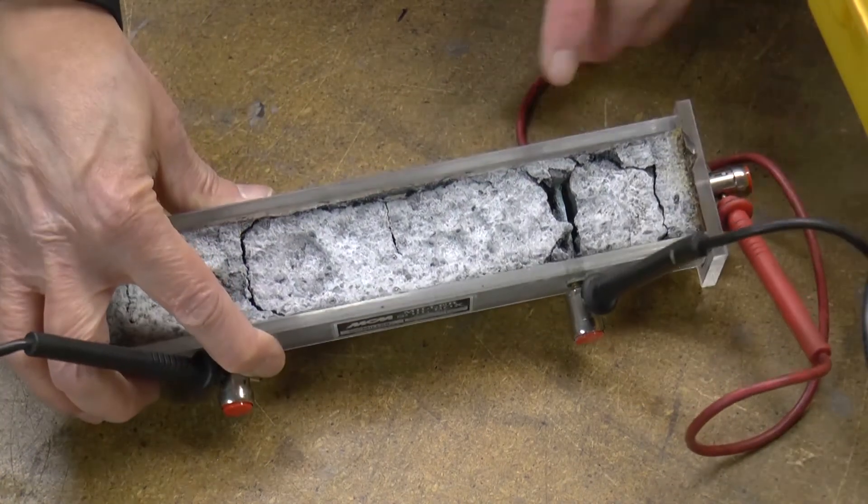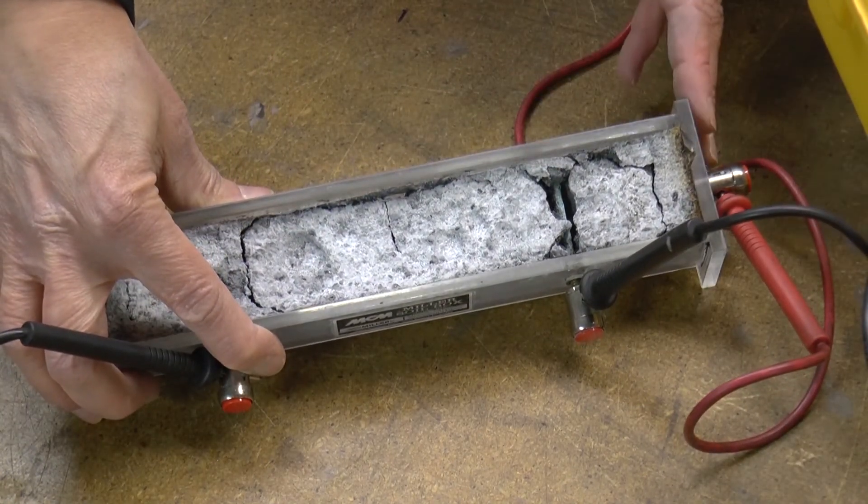You can even see that the test leads themselves have turned green from the onset of corrosion.